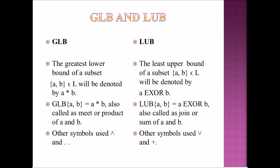GLB means the Greatest Lower Bound of a subset. For A, B belonging to L, it is denoted by A ∧ B. The GLB of A and B equals A ∧ B, also called the meet or product of A and B. The symbols used for GLB are AND and ∧. LUB means the Least Upper Bound of a subset. For A, B belonging to L, it is denoted by A ∨ B. The LUB of A and B equals A ∨ B, also called the join or sum of A and B.